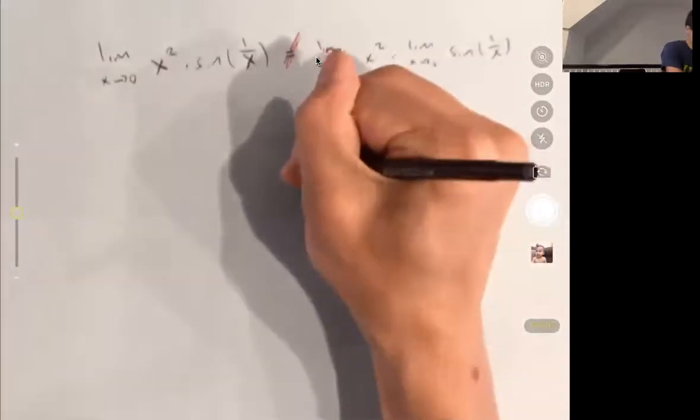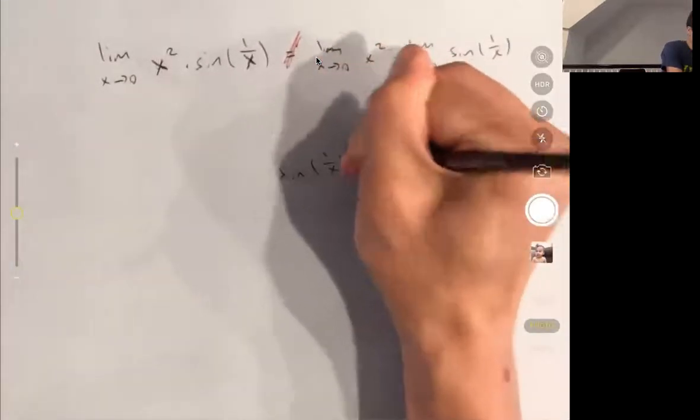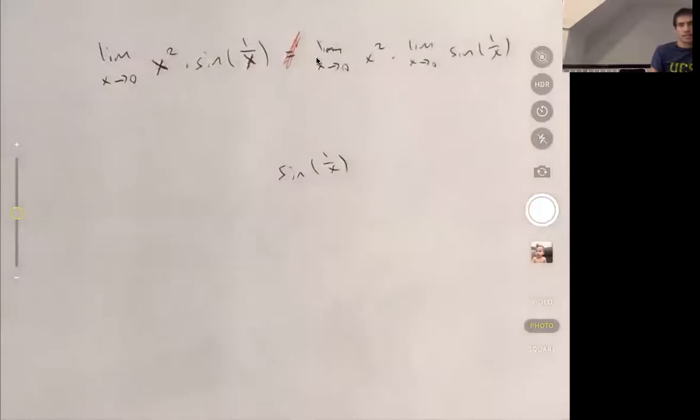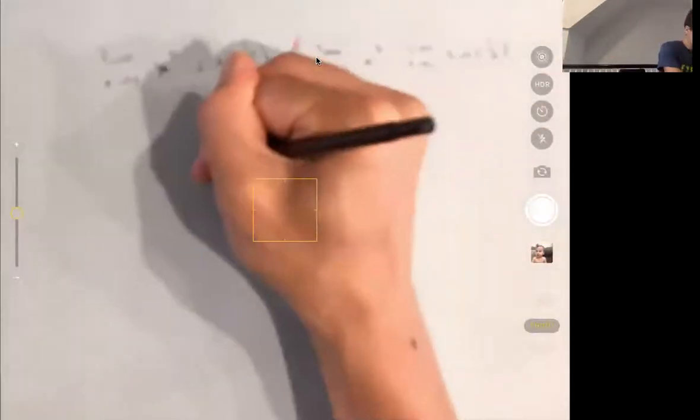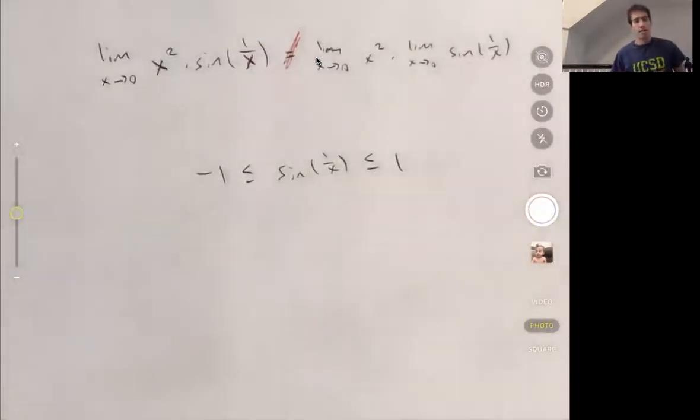So the first thing you'll notice is that sine of 1 over x, it's the output of sine, right? And the range of sine is between negative 1 and 1. So whatever this function is, whenever it's defined, it's always between negative 1 and 1. So this inequality is always true no matter what x is, as long as x is not 0, because then sine is not defined. But everywhere else, this inequality is true.